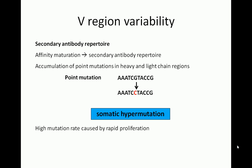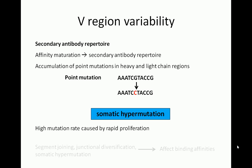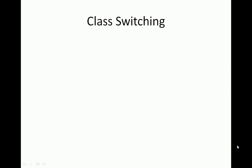The processes we have reviewed — gene segment joining, junctional diversification, and somatic hypermutation — are all involved in modifying the affinity of antibodies for different kinds of antigens. This allows us to have a set of antibodies that can bind to a wide variety of pathogens. Class switching is a process that also helps generate our body's diverse set of antibodies, but it is concerned more with making antibodies of different functions than with altering binding affinities.